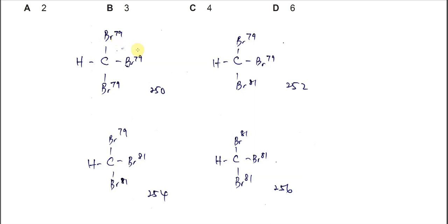Then you see one signal or one peak at 250, so m/z value is 250. Or it can be two bromine-79 and one bromine-81, which will give 252. Or it can be one bromine-79 and two bromine-81, which will give 254.